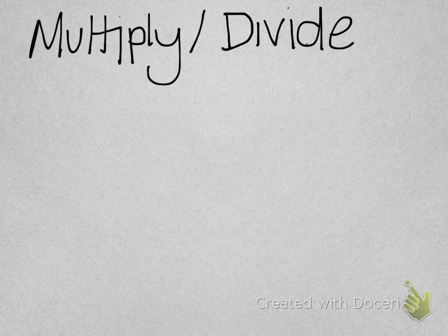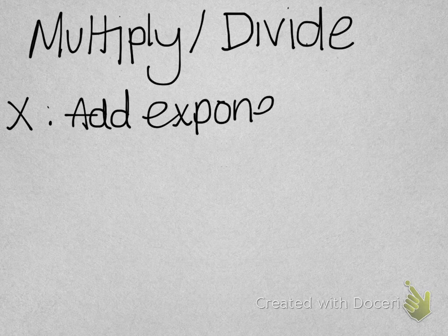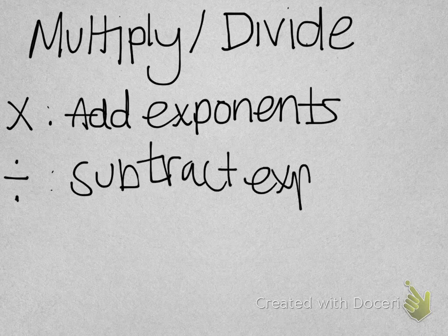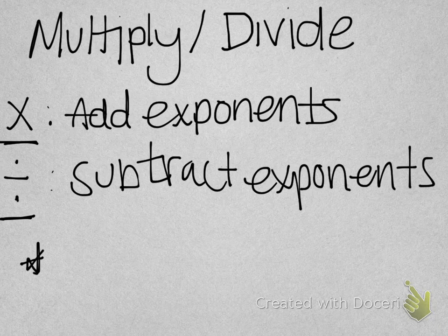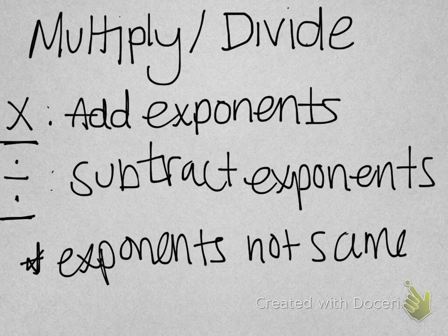For multiplying and dividing, you use exponent rules. When you multiply, you add your exponents. When you divide, you subtract your exponents. This means your exponents do not need to be the same — you're going to be working with those exponent numbers directly.